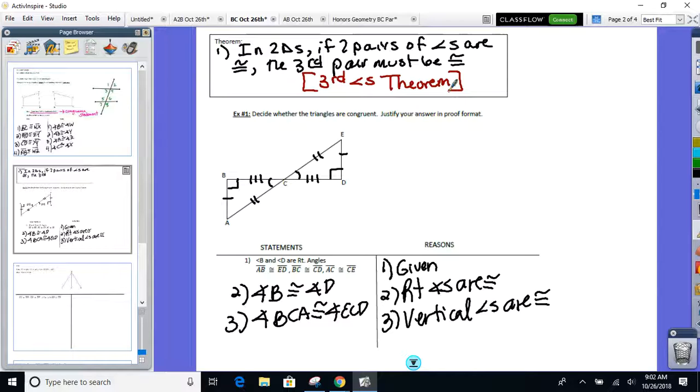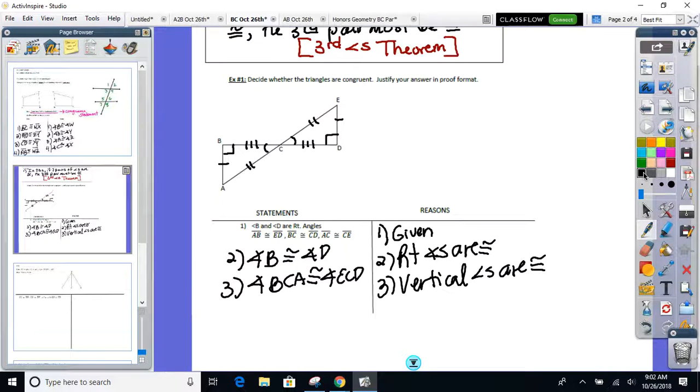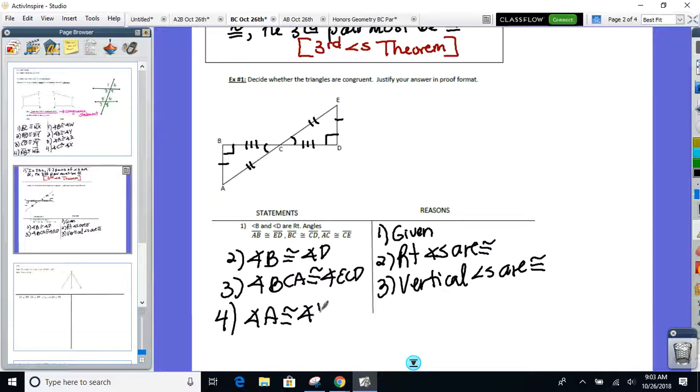So that's what we can write in the reasons column if we ever need it in a proof. So let's go back to our proof. Let's finish this beast. Angle A is indeed now congruent to angle F based on our third angles theorem. So do we have all the sides congruent? Do we have all pairs of angles? So the two triangles are congruent. But now, you've got to be careful here now because the order matters when you write the triangle vertices.